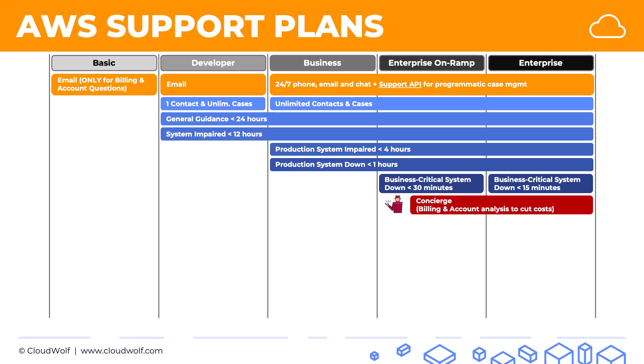In enterprise on ramp, you get access to a pool of technical account managers who can provide guidance on your architectural setup and direct you to the right AWS experts. In enterprise, you get a designated technical account manager — similar, but not the same person every time as in enterprise on ramp. In enterprise, a designated TAM is actually monitoring your environment, working with you to make sure everything runs smoothly, and directing you to the right experts.